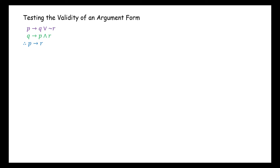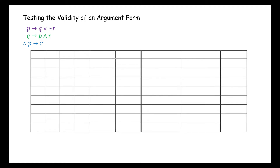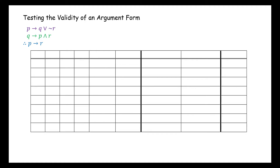We know that when the premises of an argument are true, if the conclusion is true, the argument is valid, and if the conclusion is false, the argument is invalid. So we'll set up a truth table to test the validity of this argument.